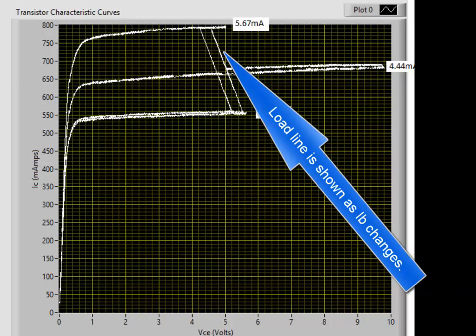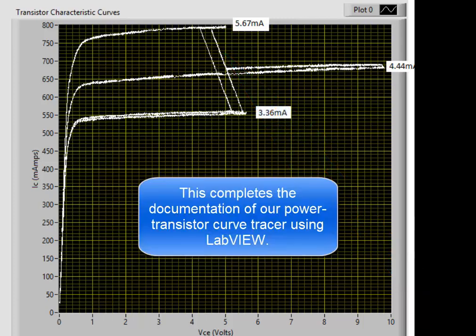There's the load line. It's shown as IB changes. This completes the documentation of our power transistor curve tracer using LabView.